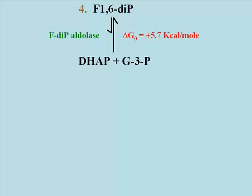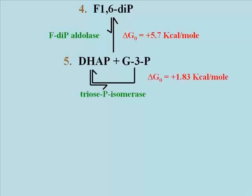As you can see, the reaction is very endergonic, to the tune of plus 5.7 kilocalories per mole. Another enzyme, triose phosphate isomerase, catalyzes the isomerization of DHAP to glyceraldehyde 3-phosphate, or G3P — another endergonic reaction, with a standard free energy change of plus 1.83 kilocalories per mole.